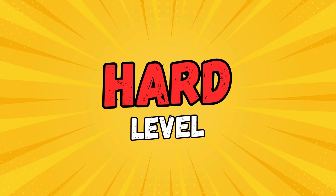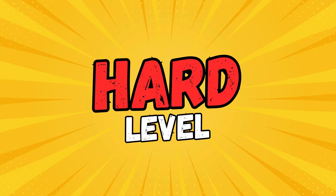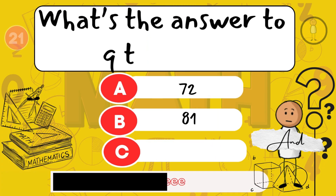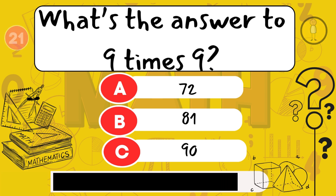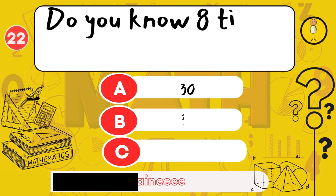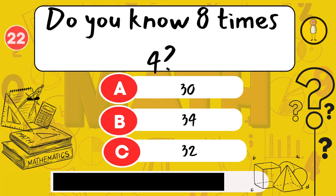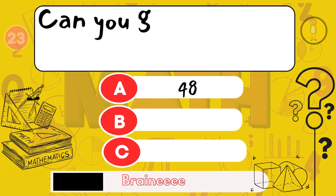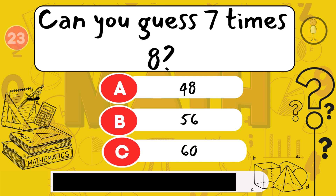Hard level. What's the answer to 9 times 9? 81. Do you know 8 times 4? 32. Can you guess 7 times 8? 56.